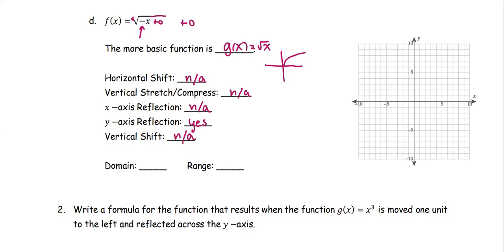Put all together with the dotted curve for the graph of √x. When x is 0, √0 is 0. x is 1 is 1. x is 4 is going to be 2. x is 9 is going to be 3. So this is the more basic function graph of √x.